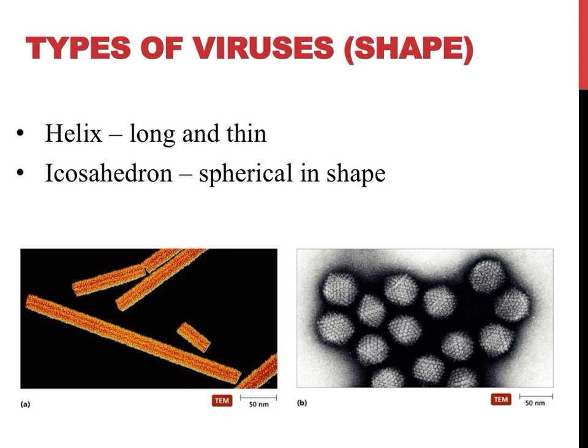The other common viral shape is an icosahedron. Icosahedral viruses appear to have 20 triangular faces, but usually just look spherical in shape. HIV and influenza are two examples of icosahedral viruses.